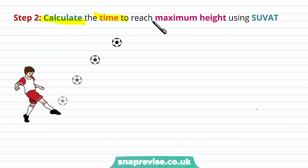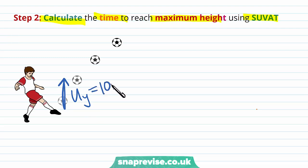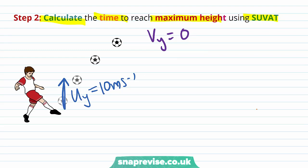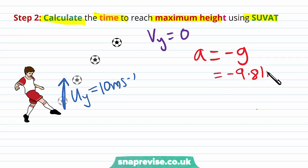Our next step is to calculate the time to reach maximum height using SUVAT. We're looking at the vertical motion of the ball, starting with uy equal to 10 meters per second. At the maximum height the ball is instantaneously at rest, so the vertical velocity vy will be instantaneously zero. Because the ball is moving upwards, gravity acts in the opposite direction, so the acceleration is minus 9.81 meters per second squared.